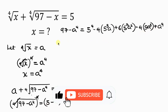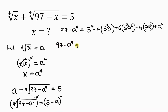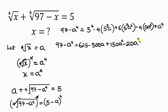Simplifying further, we have 97 minus a⁴ equal to 625 minus 500a plus 150a² minus 20a³ plus a⁴. Here, 5⁴ = 625, 4 × 5³ = 500, 6 × 5² = 150, and 4 × 5 = 20.